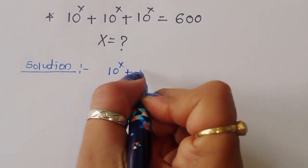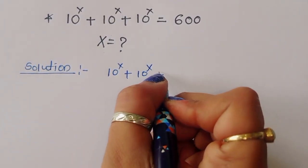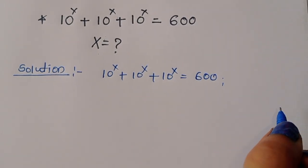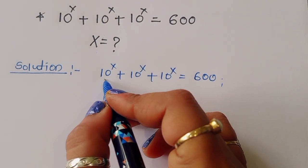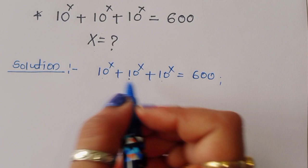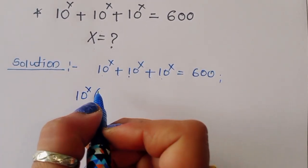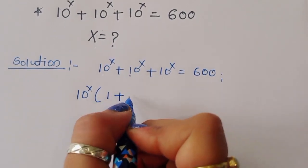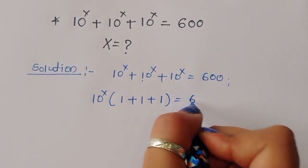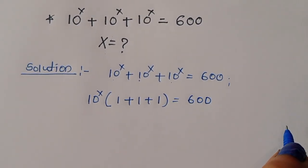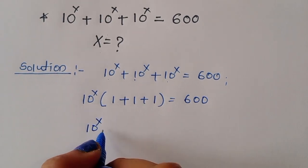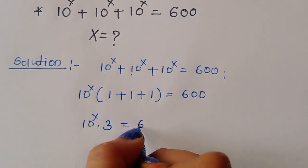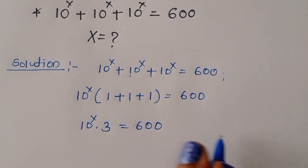10^x + 10^x + 10^x = 600. We can take 10^x as a common factor, so we get 10^x times (1 + 1 + 1) = 600. That gives us 10^x times 3 = 600.